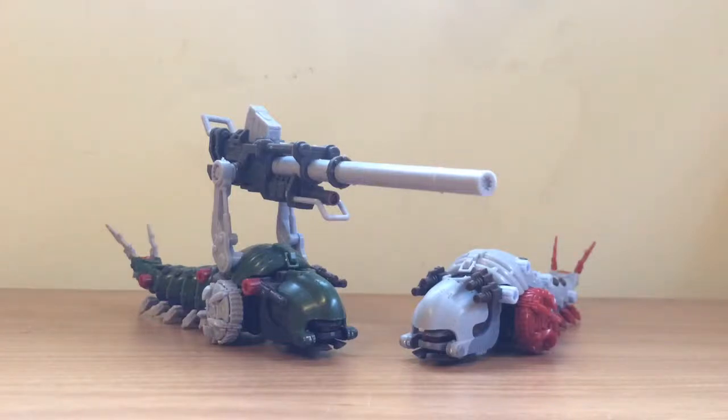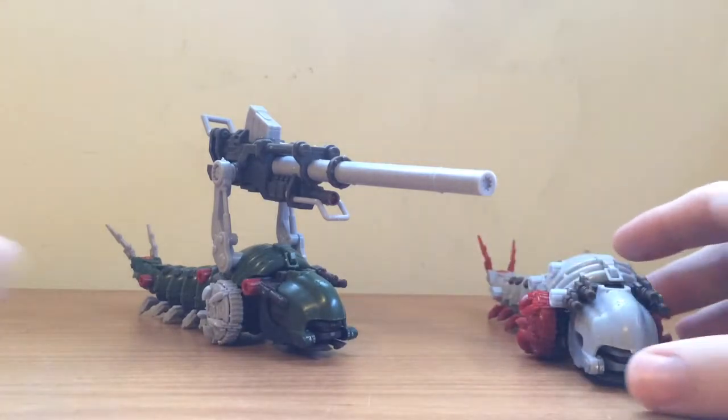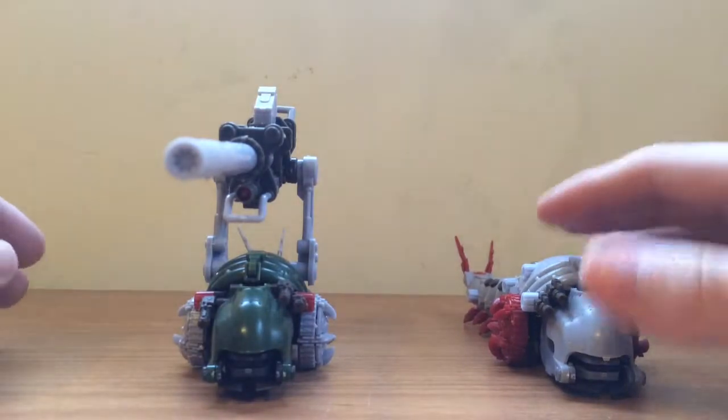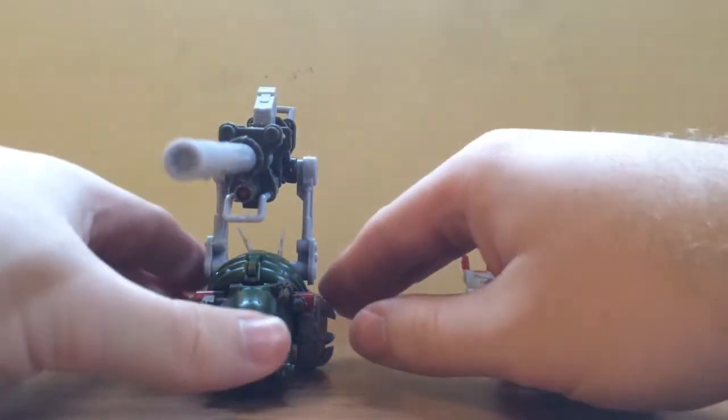Welcome to the video review of the Zoids HMM Mulga and Mulga with Cannery unit from Kotobukiya. This is the 8th kit in the HMM line and was first released in 2008. As you can see it consists of two Mulga variants: the Mulga and the Cannery Mulga.